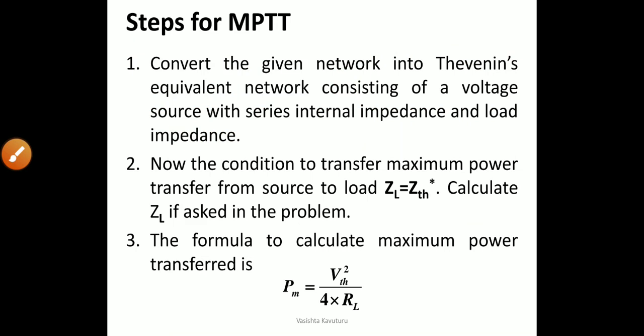We'll see the steps to find the maximum power transfer theorem parameters. First, convert the given network into a Thevenin equivalent network consisting of a voltage source with series internal impedance and load impedance. The given network consisting of so many active and passive elements can be replaced with the Thevenin equivalent circuit consisting of a Thevenin voltage source, a Thevenin impedance, and load impedance connected.